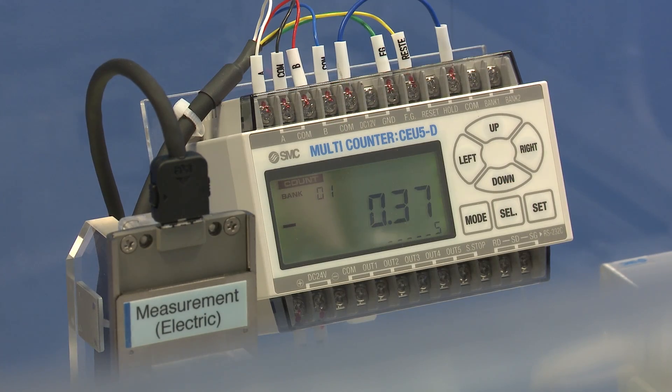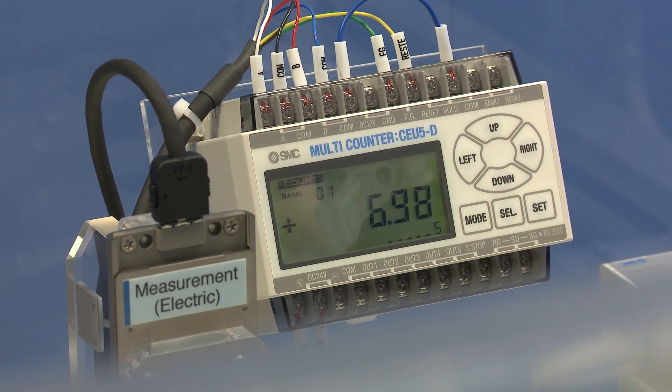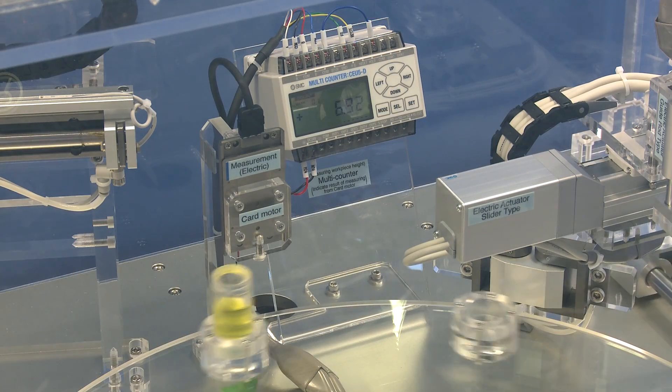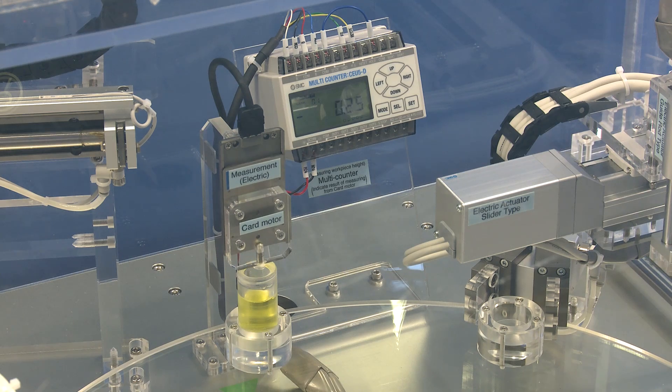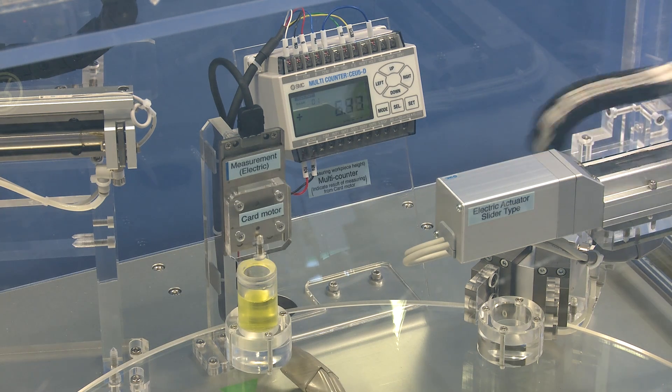Our first station is a measuring system, which is using our LAT card motor. That allows us up to 10 microns of measurement accuracy, and it's fed into our counter here, and that's showing the measurement distance of each product as they go round.